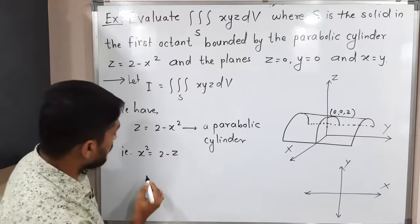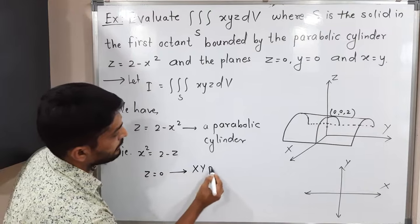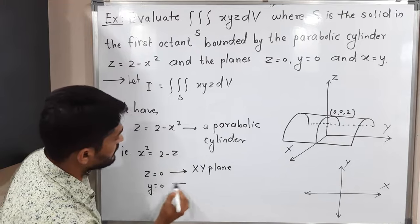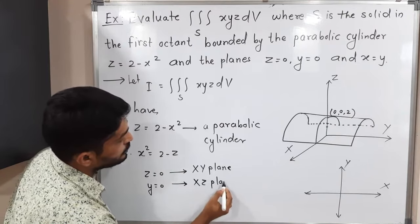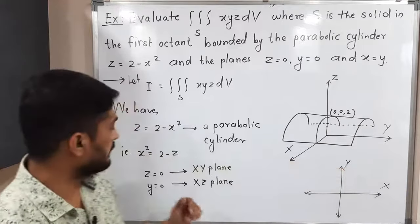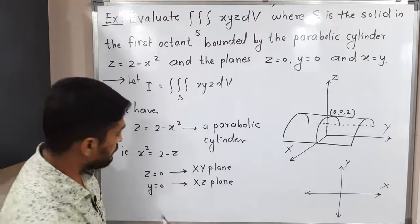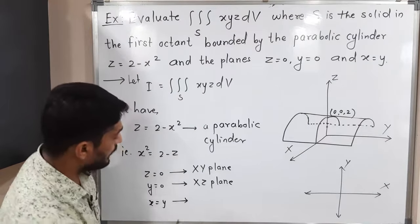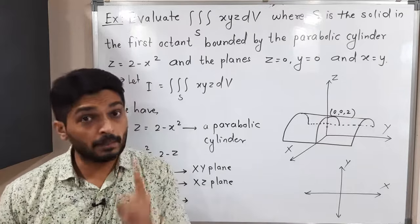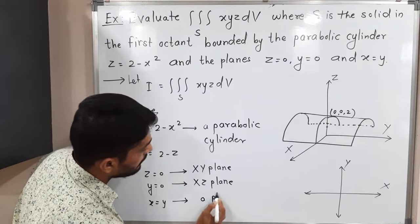After that, we have z = 0, which means the XY plane. And y = 0, which means the XZ plane. So the region is bounded by the XY plane and the XZ plane. We have one more equation: x = y. You know that x = y is an equation of a line in the XY plane, but it's a plane in 3D. In the XY plane it represents a straight line passing through the origin, but in 3D it will be a plane.